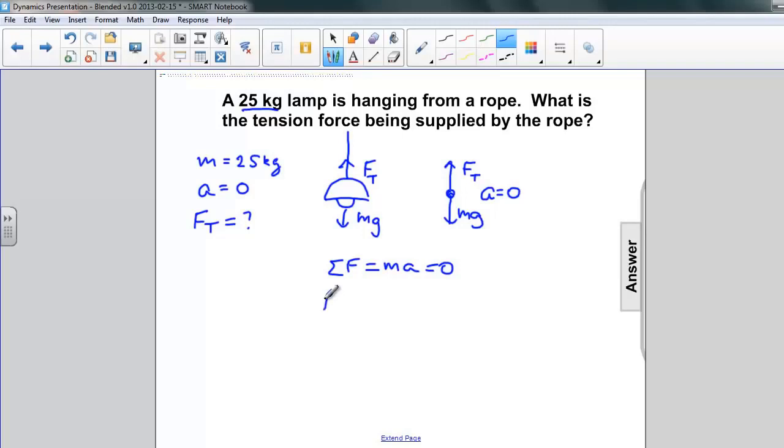So we'll just write these down, tension up, weight down, and it's equal to zero. So adding mg to both sides, we get force of tension is equal to mg.